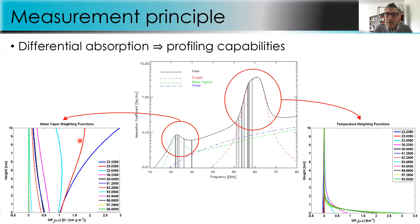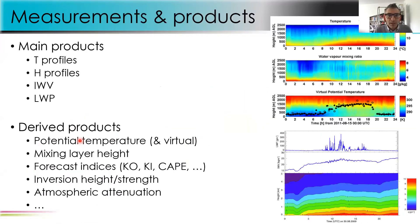For temperature, weighting functions peak sharply close to the surface, providing information about temperature profiles in the boundary layer especially. Main products include temperature and humidity profiles, from which derived products can be inferred: potential temperature, virtual potential temperature, mixing layer height, forecast indices like K-index and CAPE, inversion height and strength, and atmospheric attenuation.